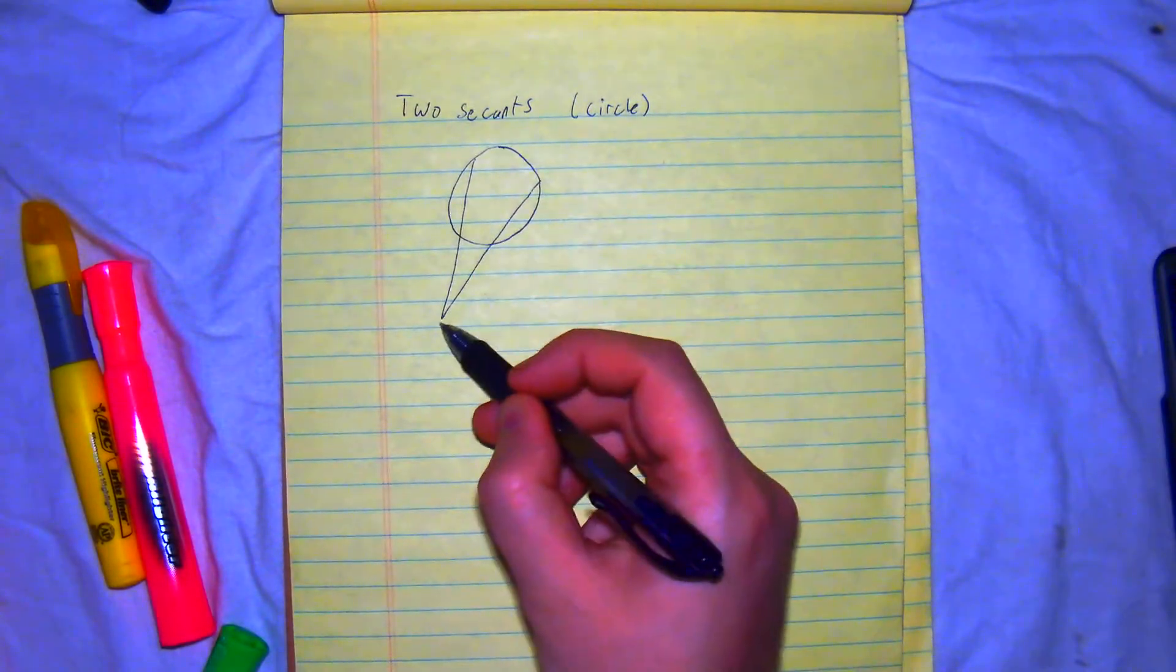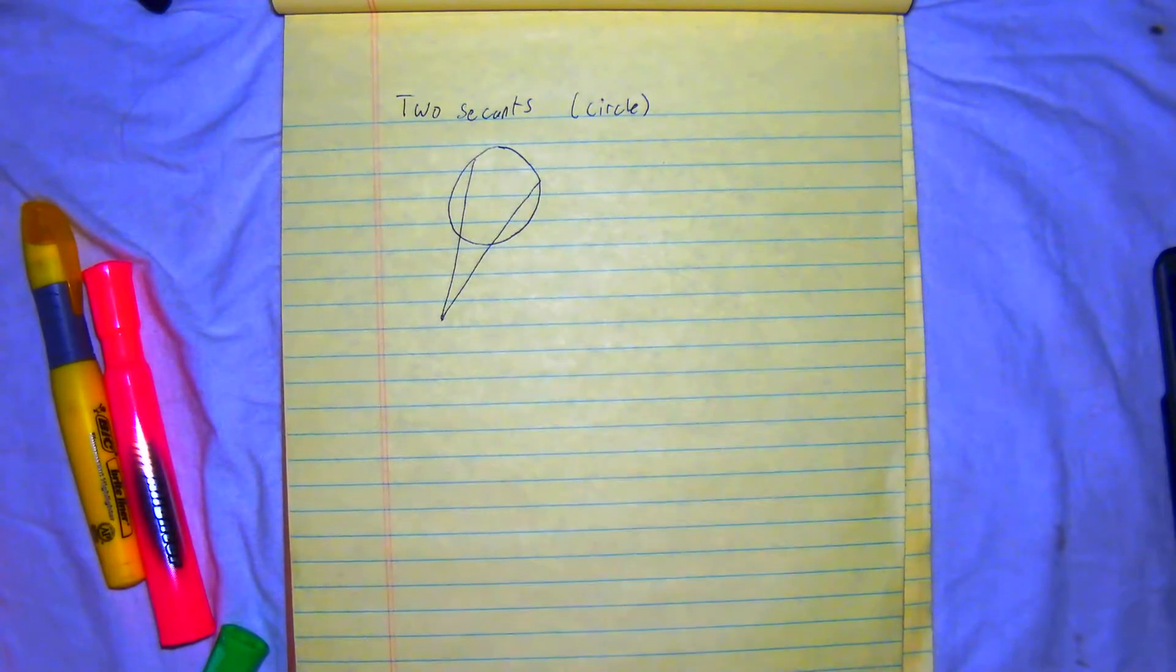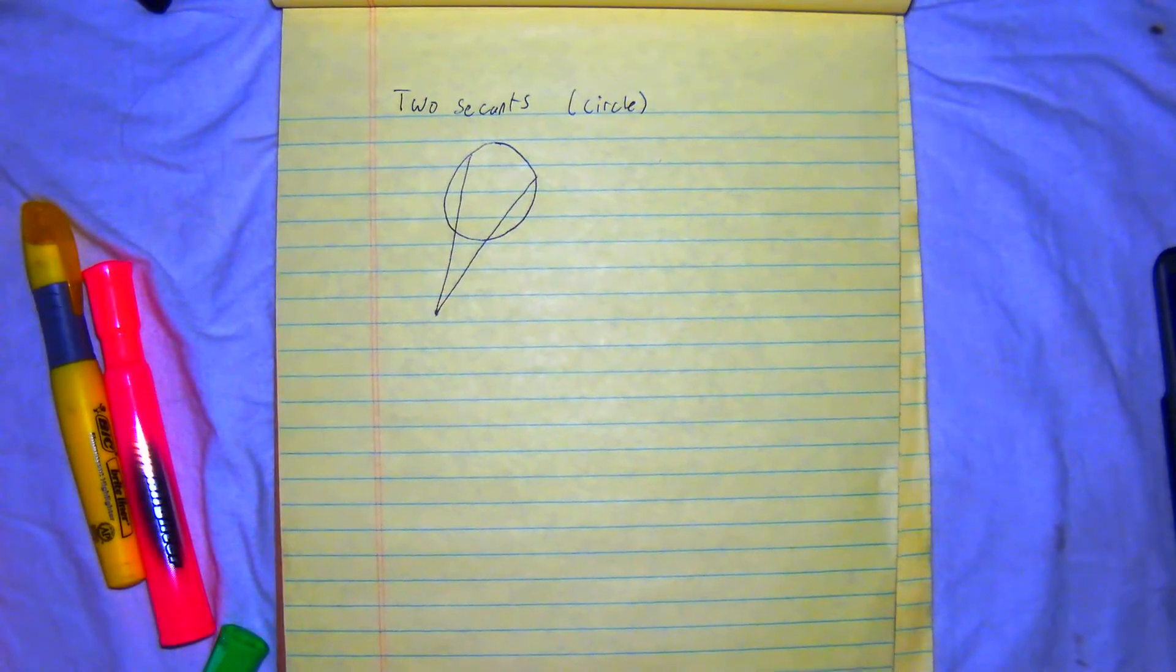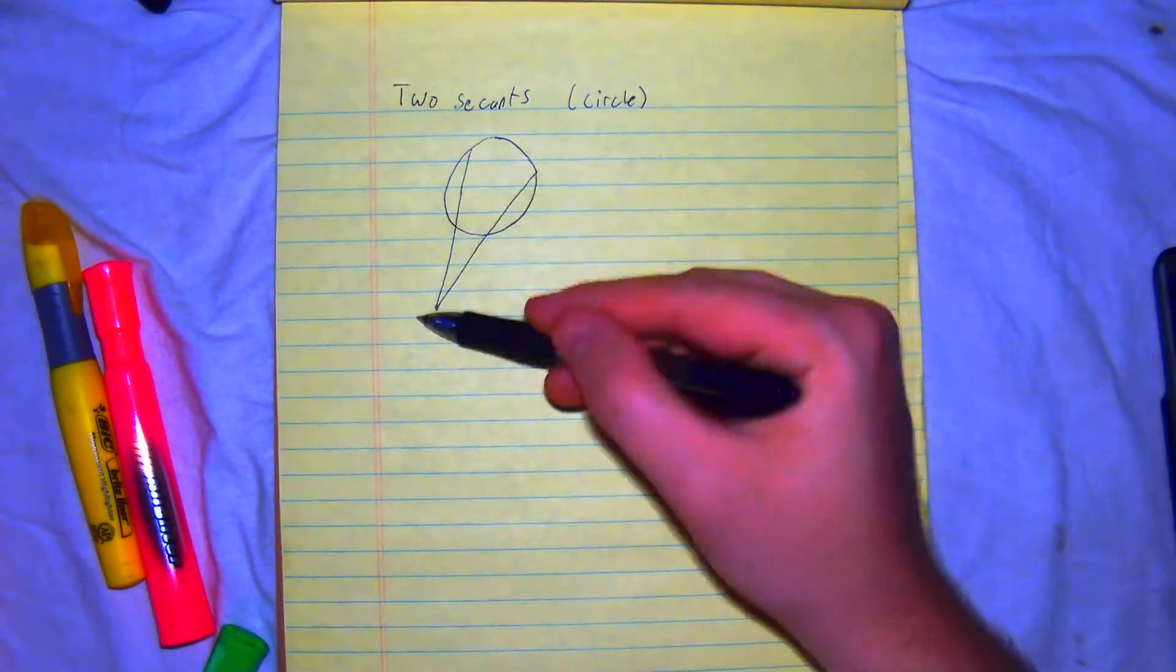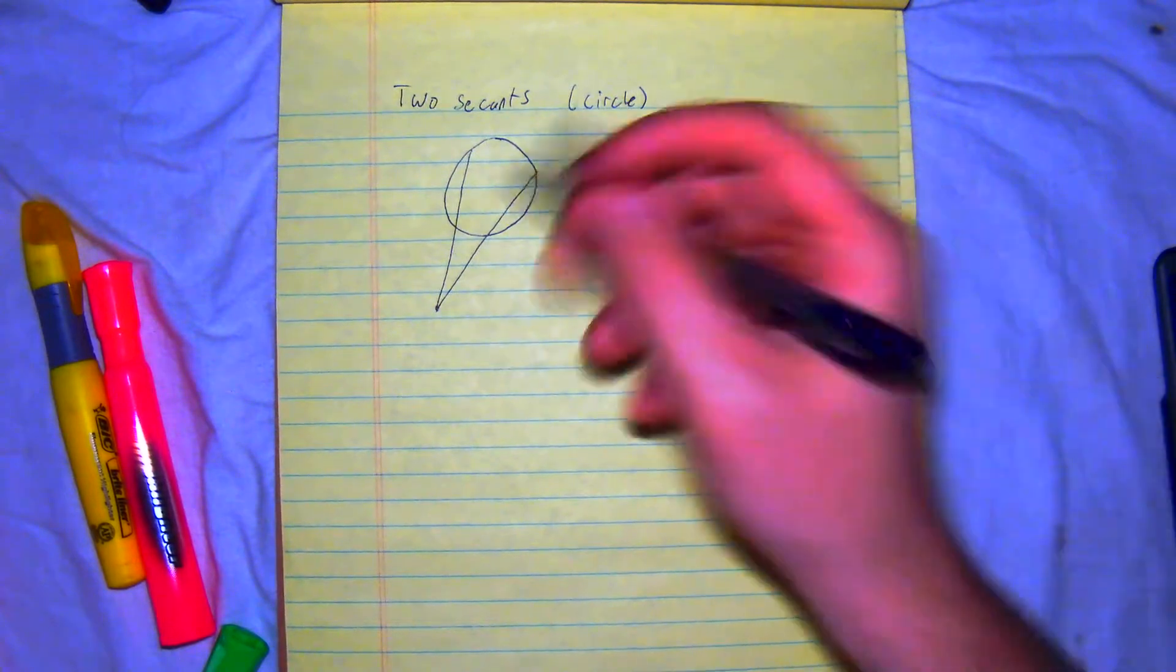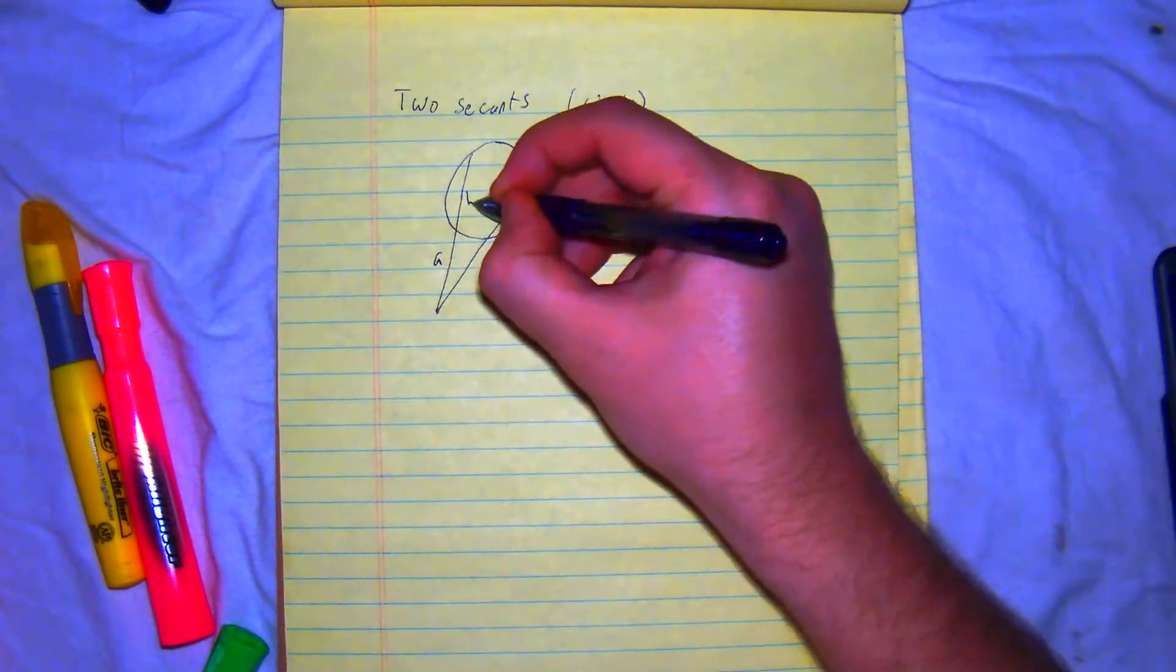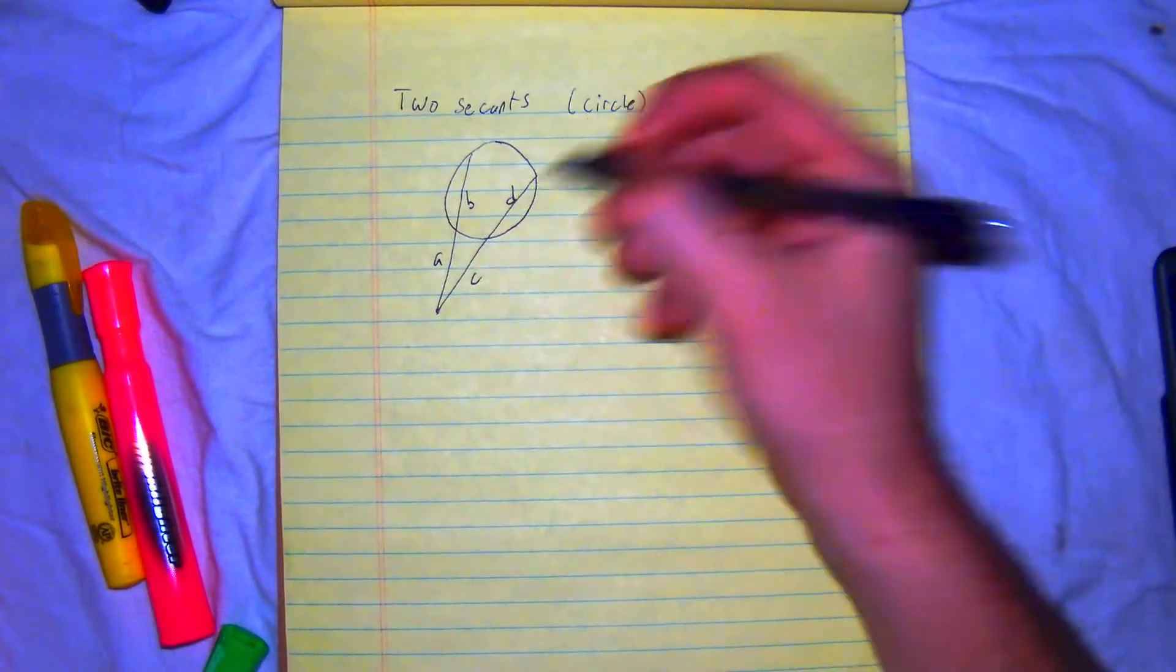As you can see, these secants share a common point right there, this is what allows it to work. All right, our two secants, secant 1, secant 2, A, B, C, D.